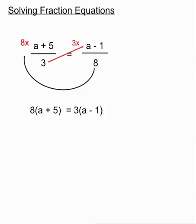So then we've got a bracket type equation here on both sides. Now we need to expand both of those. So 8 times a is 8a. 8 times 5 is 40. It's just a normal expanding of brackets. On the right hand side we have 3 times a is 3a. 3 times minus 1 is minus 3.